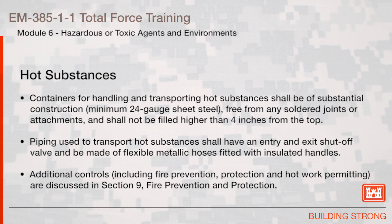Containers for handling and transporting hot substances shall be of substantial construction, minimum 24-gauge sheet steel, free from any soldered joints or attachments, and shall not be filled higher than 4 inches from the top. Piping used to transport hot substances shall have an entry and exit shutoff valve and be made of flexible metallic hoses fitted with insulated handles. Additional controls including fire prevention, protection, and hot work permitting are discussed in Section 9, Fire Prevention and Protection.